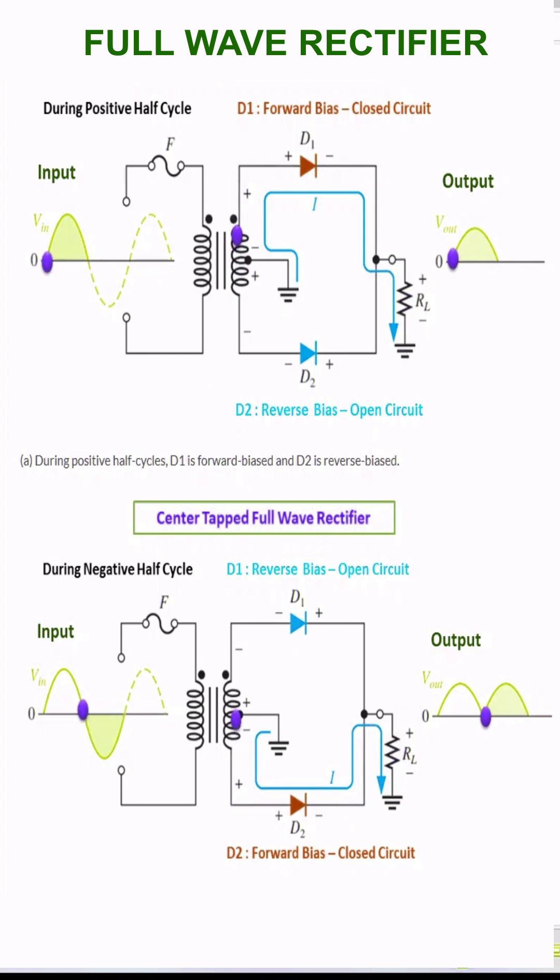During the positive half cycle, diode D1 is forward biased as it is connected to the top of the secondary winding while diode D2 is reverse biased as it is connected to the bottom of the secondary winding. Due to this, diode D1 will conduct acting as a short circuit and D2 will not conduct acting as an open circuit.